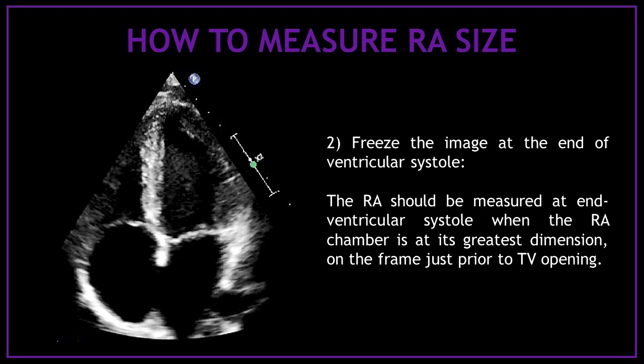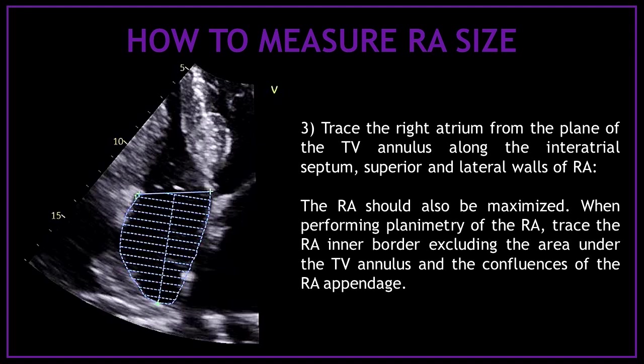The second step is to freeze the image at the end of ventricular systole. The right atrium should be measured at end ventricular systole when the right atrial chamber is at its greatest dimension, on the frame just prior to the tricuspid valve opening. The third step is to trace the right atrium from the plane of the tricuspid valve annulus along the interatrial septum, superior and lateral walls of the right atrium. The right atrium should also be maximized.